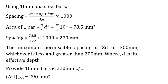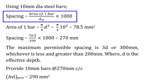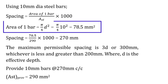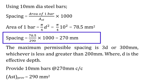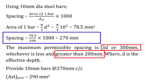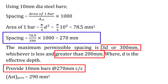Using 10 mm diameter steel bars, spacing of the bars = (area of 1 bar / area of steel) × 1000. Area of 1 bar = π/4 × D² = π/4 × 10² = 78.5 mm². Substituting this value, spacing = 270 mm. The maximum permissible spacing is 3 times D or 300 mm, whichever is less, and it shall be greater than 200 mm, where D is the effective depth. Hence, we can provide 10 mm steel bars at 270 mm center to center.